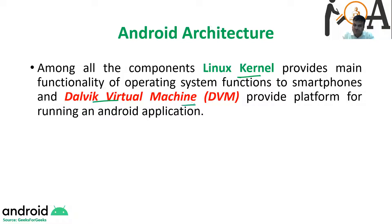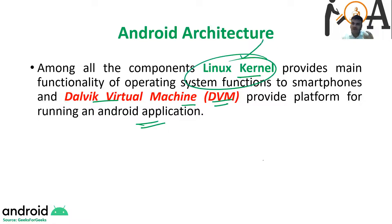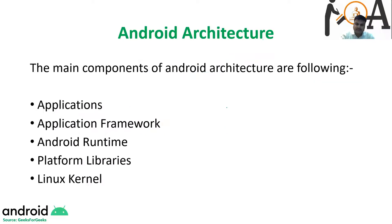The Dalvik Virtual Machine, also called DVM, provides the platform for running an Android application. The most important component of Android architecture is the Linux kernel — you can say it's the heart of Android architecture. The DVM provides the platform for running the operating system, just like JVM does for Java. The main components of Android architecture are: Applications, Application Framework, Android Runtime, Platform Libraries, and Linux Kernel.